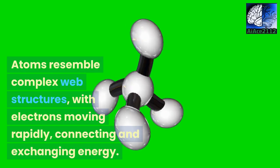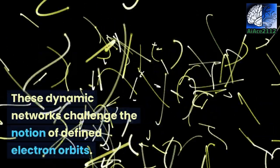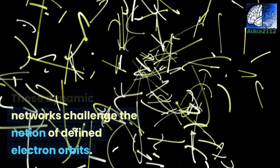Atoms resemble complex web structures, with electrons moving rapidly, connecting and exchanging energy. These dynamic networks challenge the notion of defined electron orbits.